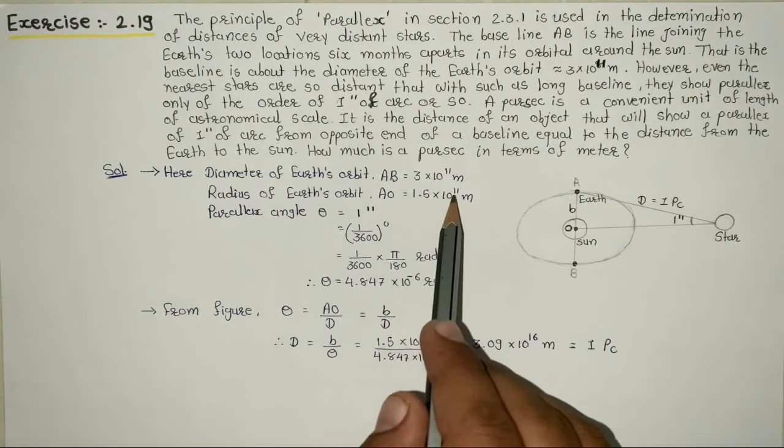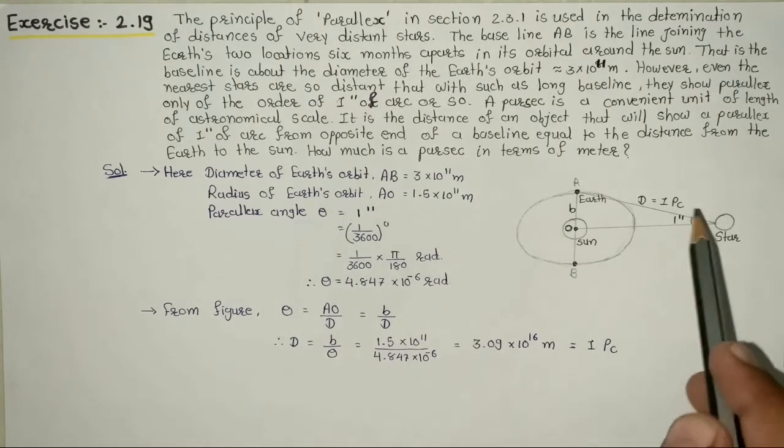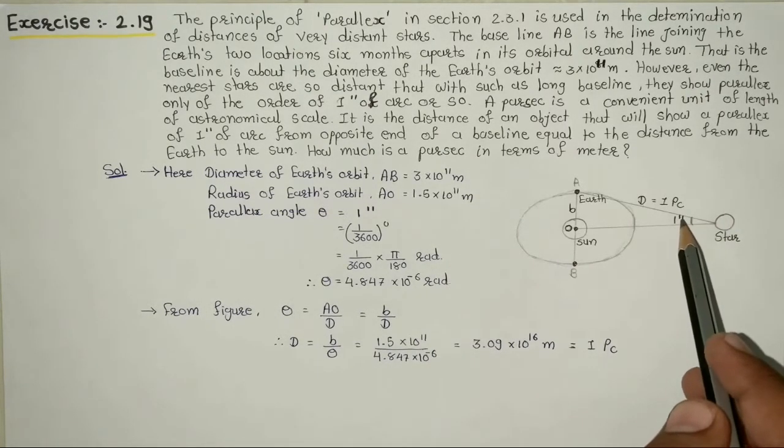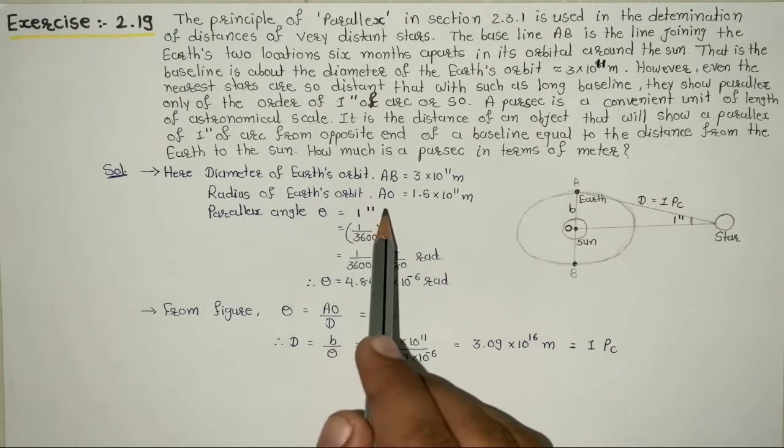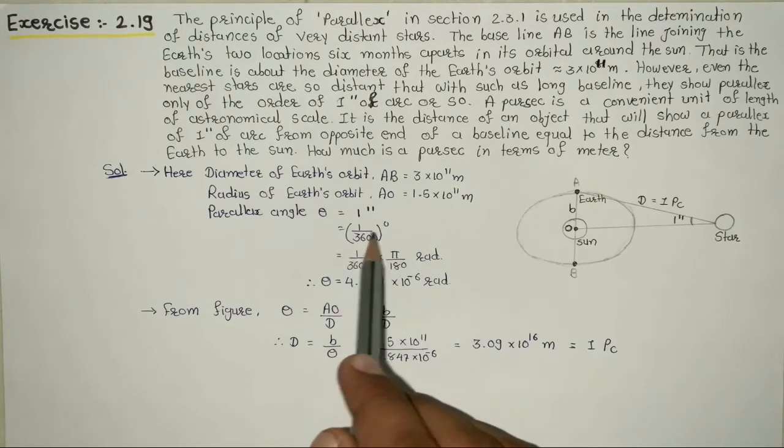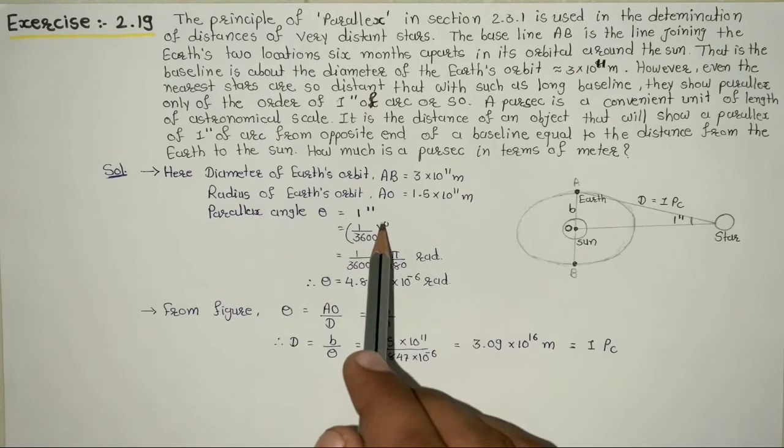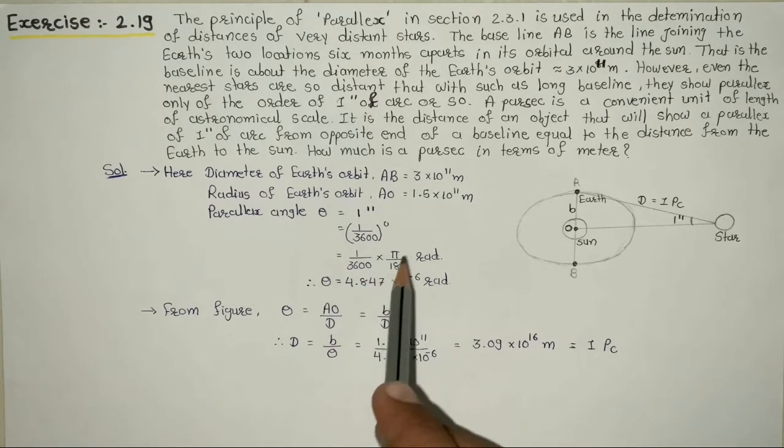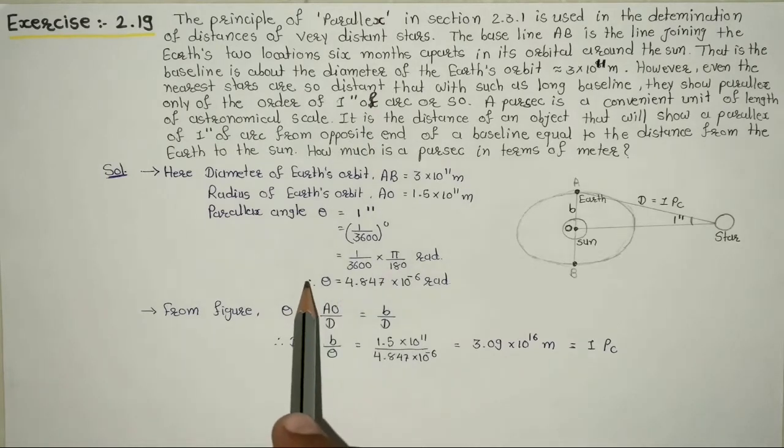Here the angle is one second of arc. If we convert it to radians, one second we first convert to degrees by dividing by 3600. To convert degrees to radians, multiply by pi by 180. Solving this, we get theta in radians as 4.847 times 10 to the power minus 6 radians.